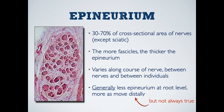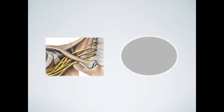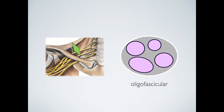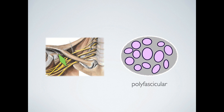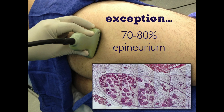Epineurium makes up a lot of the cross-sectional area of a nerve, generally between 30 to 70%, but this depends on the nerve. Two broad histologic rules apply: first, the greater the number of individual fascicles, the thicker the epineurium; and second, nerves generally have a higher proportion of fibers and fascicles at the root level and pick up more epineurium and connective tissue as they travel to the periphery. This is why interscalene roots look dark on ultrasound — they're essentially monofascicles. As you travel along the brachial plexus, the nerves become oligofascicular and then polyfascicular, explaining why the median nerve looks hyperechoic from all the connective tissue. The notable exception is the subgluteal sciatic nerve, which is composed of 70 to 80% epineurium, perhaps as a protective adaptation to the mechanical stress near the hip joint.